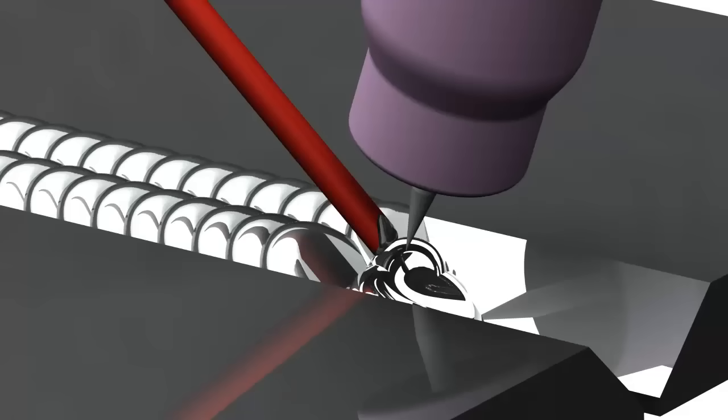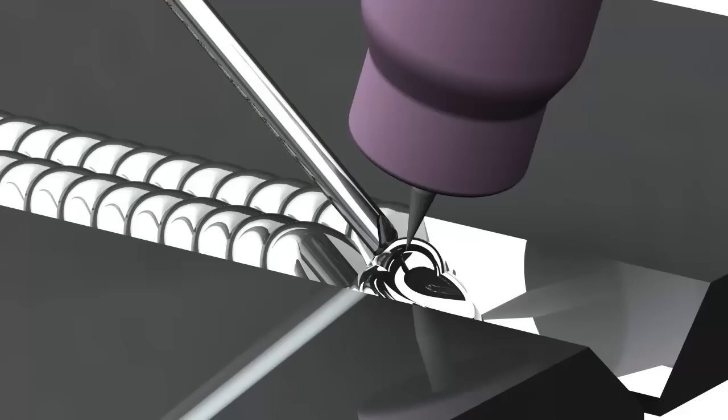Now, you can TIG weld with or without filler metal, and that's not a choice you have in a lot of other processes. If you want to add filler metal to a TIG weld, use a filler rod, which is just a rod of metal with a specific alloy. You want to make sure that the filler metal you're using is compatible with the base metal, and that it has the strength required to do the job.